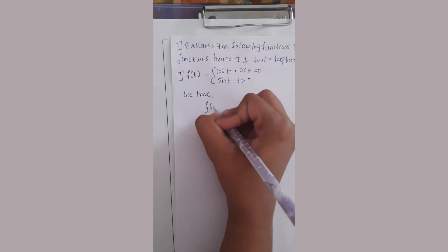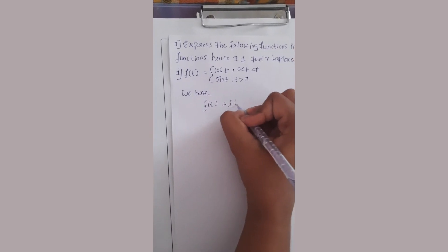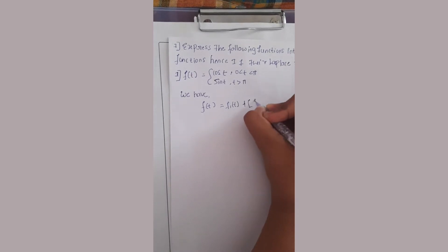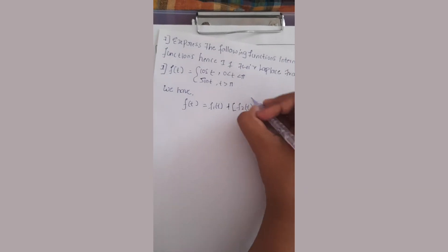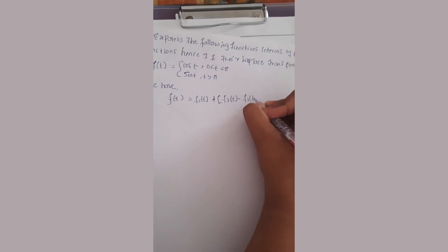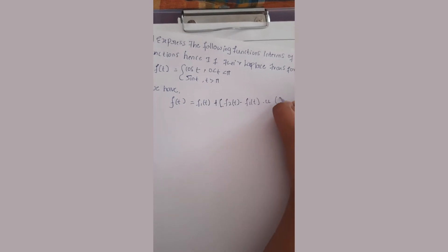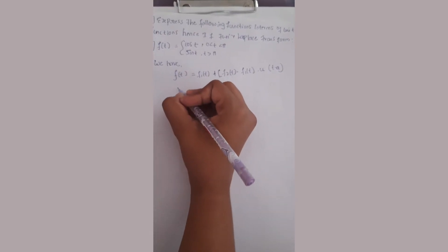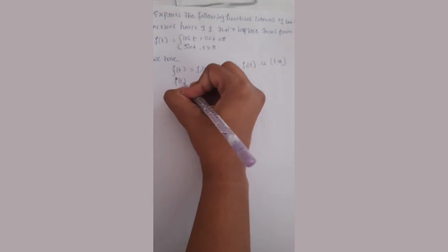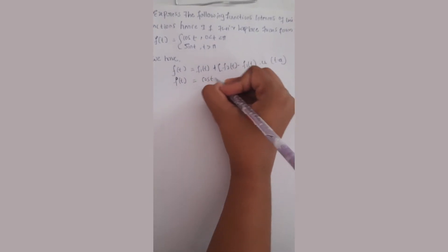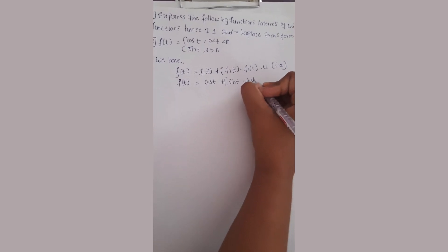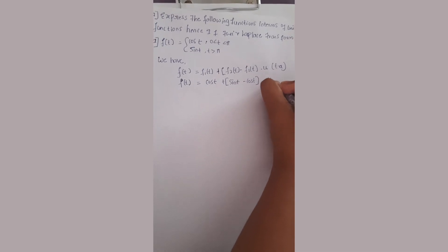We have f of t equal to f1(t) plus f2(t) into u of t minus a. Therefore, f of t equals cos(t) plus (sin(t) minus cos(t)) into u(t minus pi).